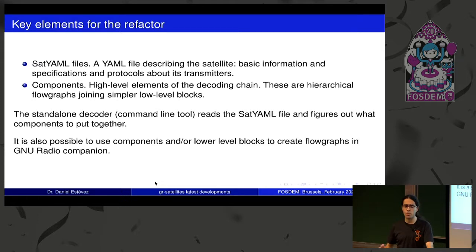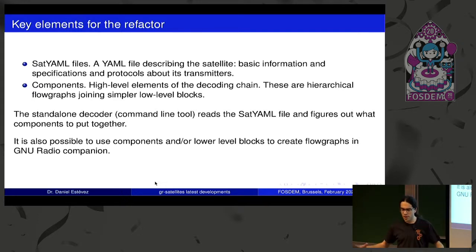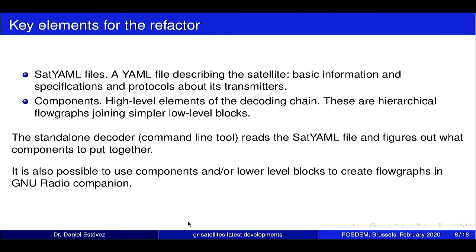The other key element is components. The idea of components is to break up the decoding chain into logical higher-level functions. You have very simple blocks that you put together into higher level components, and then the way to write a SATYAML file is to specify what components you need to put together to decode the satellite. The standalone decoder reads the SATYAML file, figures out what components it needs to connect together, and runs the flow graph.